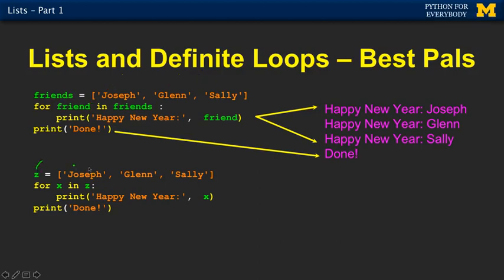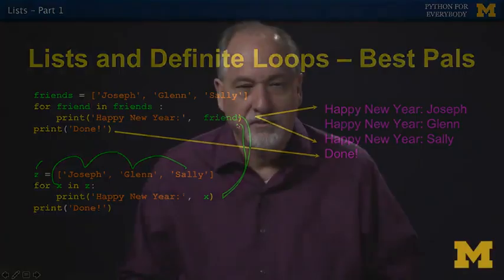It can be anything you want. As a matter of fact, this is exactly the same code. Z equals Joseph, blah, blah, blah. And for x in z, x takes on the successive values. Python sees these two things as completely equivalent. But you, as a human being, read them as something different. And so that's the choice of variable names.